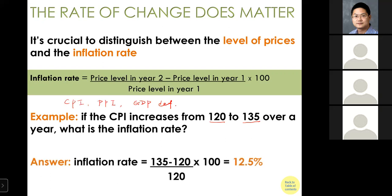The answer is just the percentage change in price level. You may want to review the previous chapter to see how we calculate CPI. As a quick review, CPI is calculated by looking at the cost of a basket of goods.